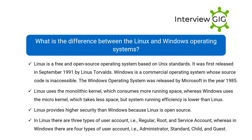Linux uses the monolithic kernel, which consumes more running space, whereas Windows uses the microkernel, which takes less space but system running efficiency is lower than Linux. Linux provides higher security than Windows because Linux is open source. In Linux there are three types of user accounts: regular, root, and service account, whereas in Windows there are four types: administrator, standard, child, and guest.